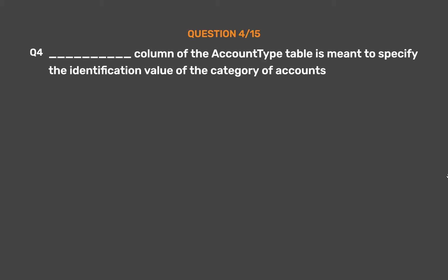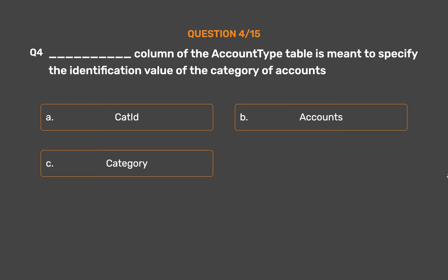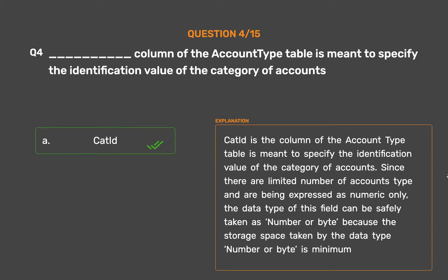Question No. 4. The blank column of the account type table is meant to specify the identification value of the category of accounts. The correct answer is Option A — CatID. CatID is the column of the account type table meant to specify the identification value of the category of accounts. Since there are a limited number of account types and they are expressed as numeric only, the data type of this field can be safely taken as number or byte, as the storage space taken by number or byte is minimum.